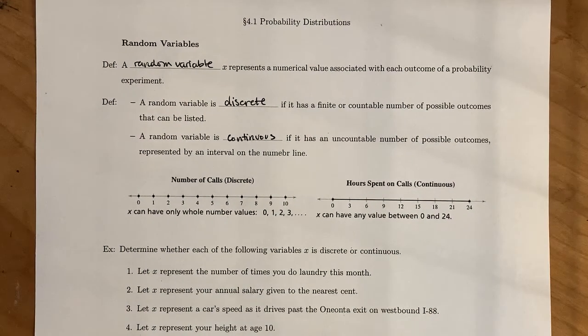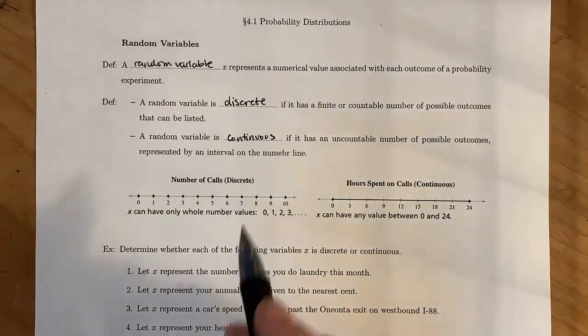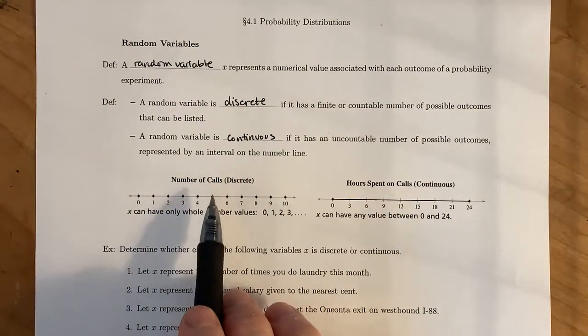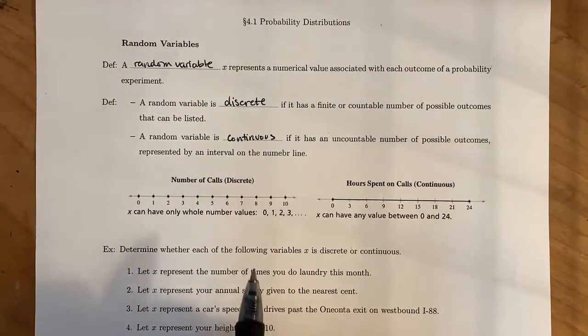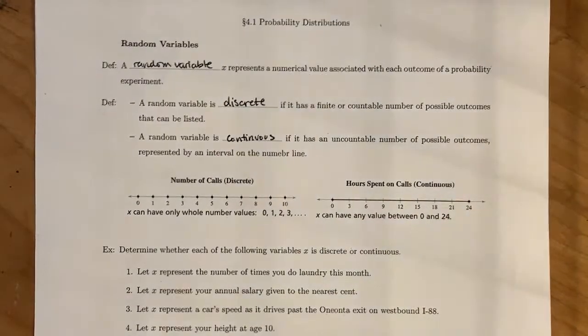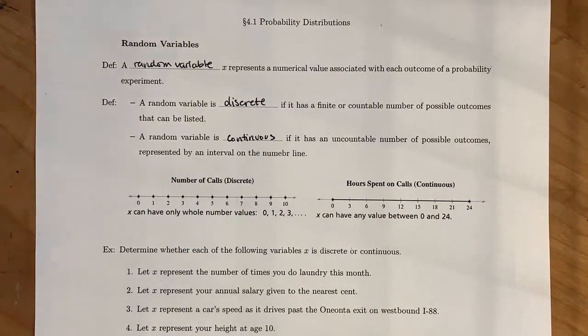And a good way to kind of distinguish between the two, the number of calls that you can make in a day is going to be a discrete random variable, since phone calls are measured in whole numbers. So you can have zero calls, one call, two calls, 10 calls, 15 calls, you name it.